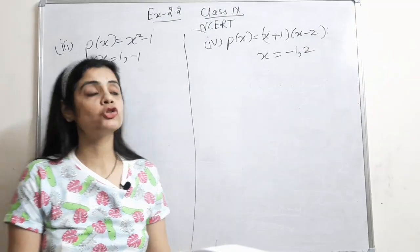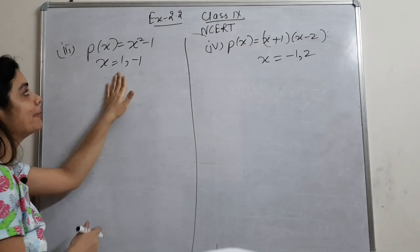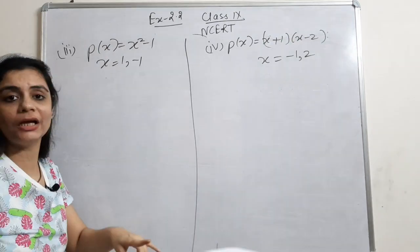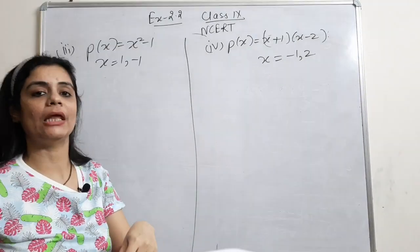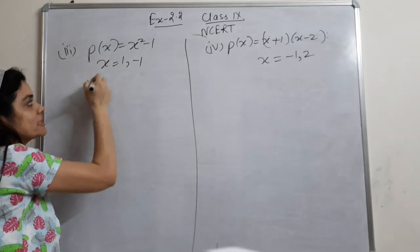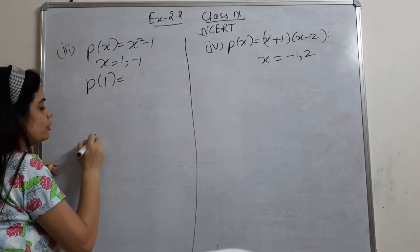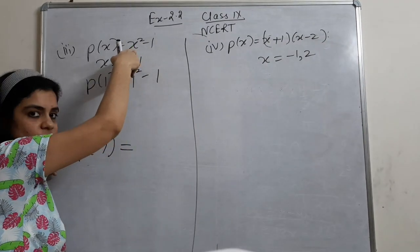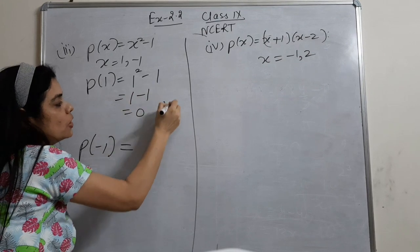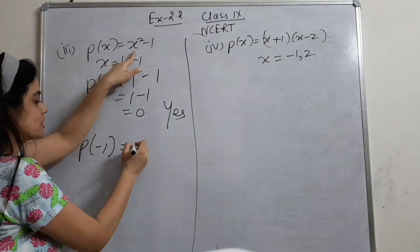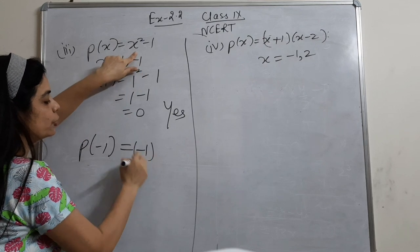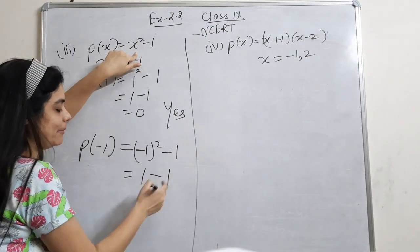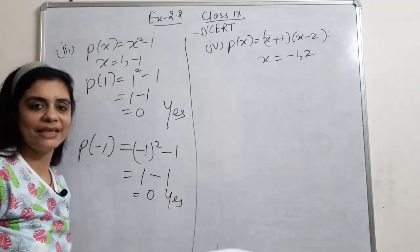Now we move to the 3rd and 4th parts. In the 3rd part, there are two values given: 1 and minus 1, so we check both. When I put x = 1: 1² minus 1 is 0 — yes! Now put x = minus 1 into x² minus 1: (-1)² is 1, so 1 minus 1 is 0 — again yes.